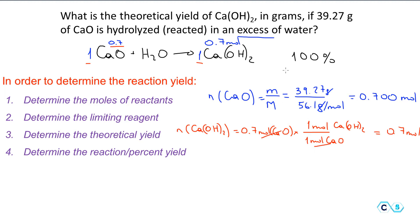The ratio is 1 to 1, which is where we get 0.700 moles. It's very useful to practice determining the moles just by looking at the coefficients rather than always doing the full mole ratio calculation, but of course you can use both methods.